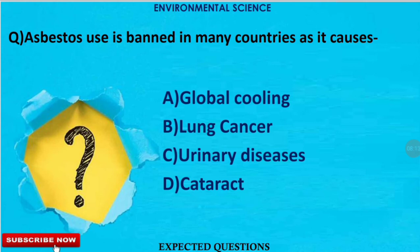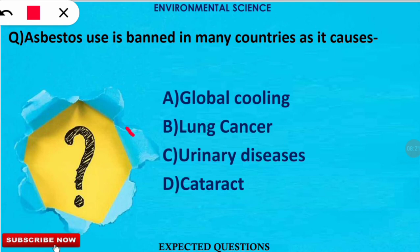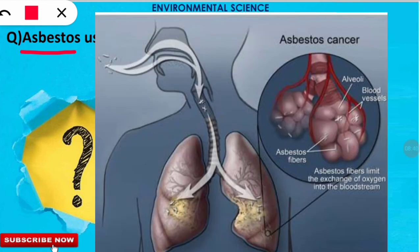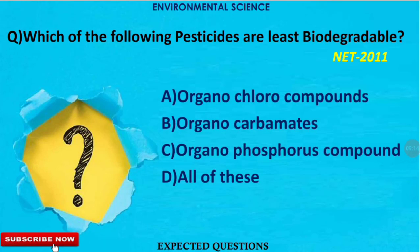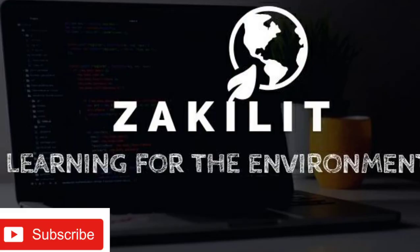Asbestos use is banned in many countries because it causes — the correct option is B — lung cancer. Asbestos is a silicate mineral composed of iron, silicon, oxygen, and hydroxyl ions. The next question asks which of the following pesticides are least biodegradable.